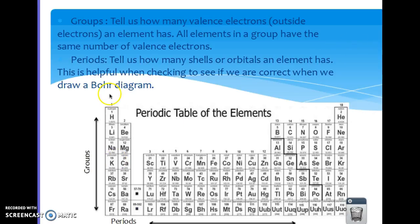So groups or families are the ones going down this way vertically, so there are 18 of those, and the periods are going across this way. There are eight of those.